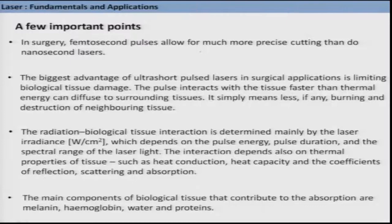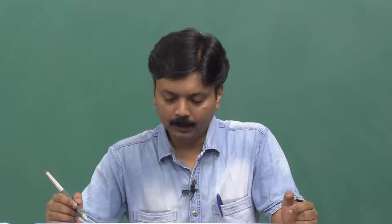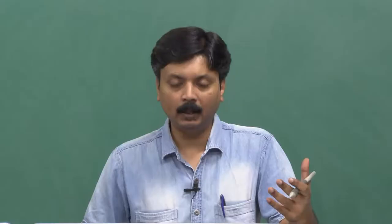Biological tissues that are of interest when we try to do laser surgery have several components. The most important components that contribute to light absorption include melanin, hemoglobin, and several amino acids, proteins, and water. They absorb light of various different wavelengths. The absorption spectra of several such components are shown here, and you can see they have several absorption bands in different regions of the light spectrum from ultraviolet to infrared. The corresponding laser lines are also displayed.